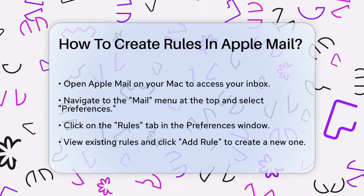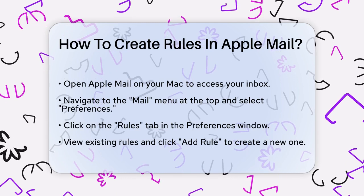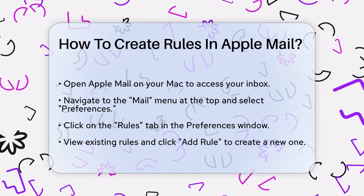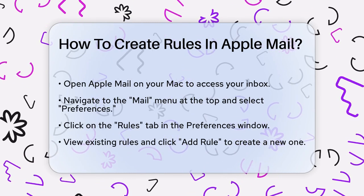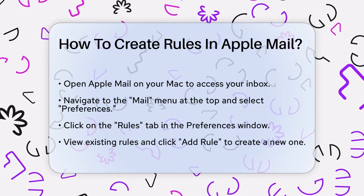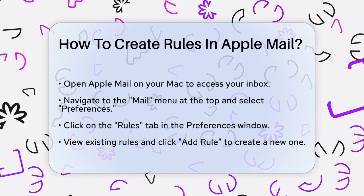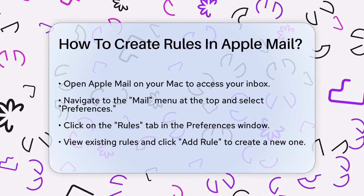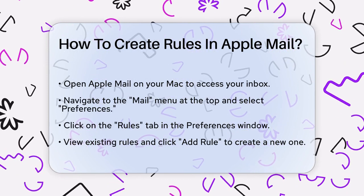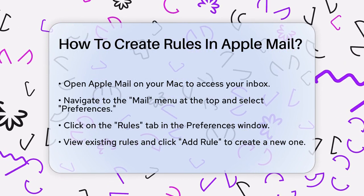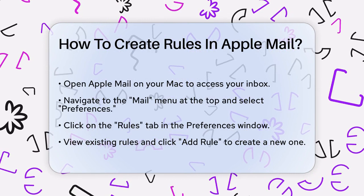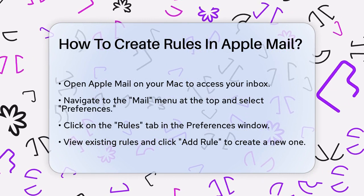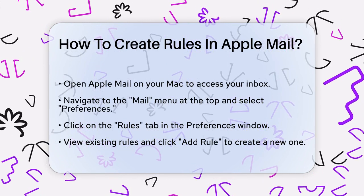First, open Apple Mail on your Mac. You'll see your inbox and other folders on the left side. To create a rule, you need to go to the Mail menu at the top of the screen and select Preferences. Once you're in the Preferences window, click on the Rules tab.